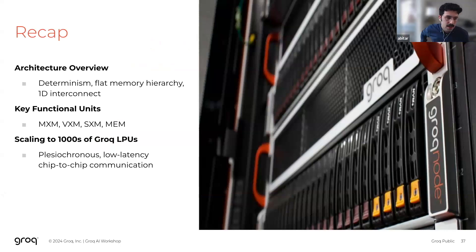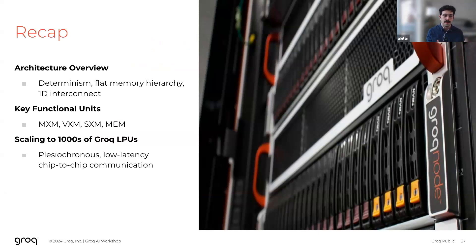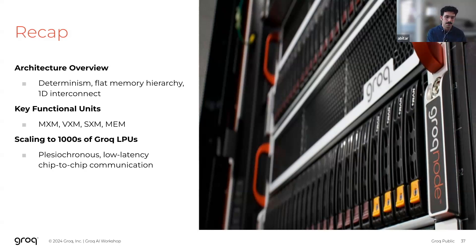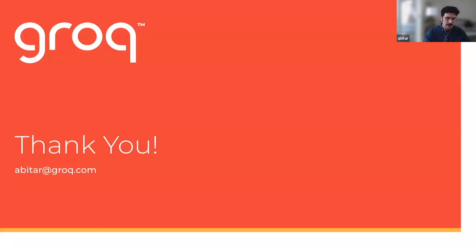That brings me to the end of my talk. As a quick recap: I described an overview of the architecture and how it empowers our software via its determinism, flat memory hierarchy, and simple interconnect. We talked about the key functional units on the chip — the MXM, VXM, SXM, and memory. And finally, I described how we leverage the architecture to scale to hundreds to thousands of Groq LPUs via its plesiochronous communication paradigm coupled with low-latency network topologies. I'm happy to take any questions. Thanks a lot.